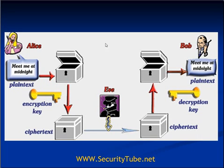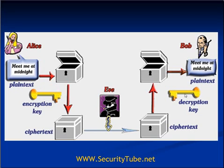This is a pictorial representation of the symmetric key cryptography algorithm. Alice has her plain text message — say, 'meet me at midnight.' She encrypts that message with the encryption key and sends the encrypted ciphertext to Bob. Bob has the same shared key, so Bob is able to decrypt that message to get again the same plain text: 'meet me at midnight.'